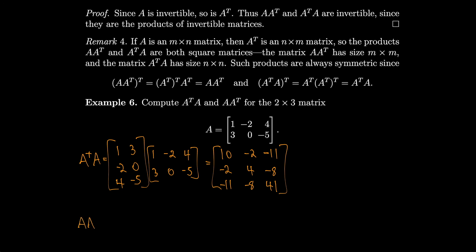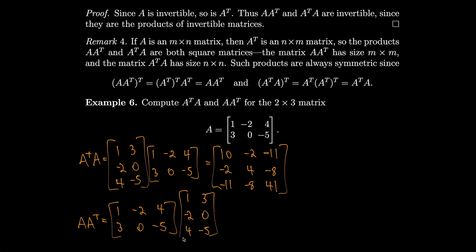For A·Aᵀ: multiplying [1,−2,4; 3,0,−5] by its transpose [1,3; −2,0; 4,−5] gives the 2×2 matrix with entries 21, −17, −17, 34, which is symmetric because the −17 off-diagonal entries swap when you take the transpose, confirming it equals its own transpose.